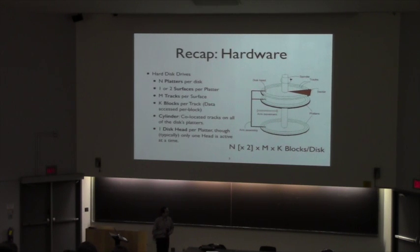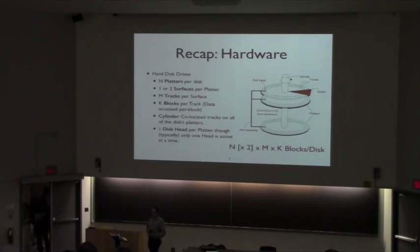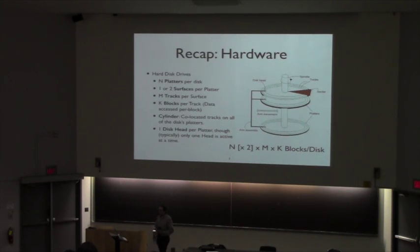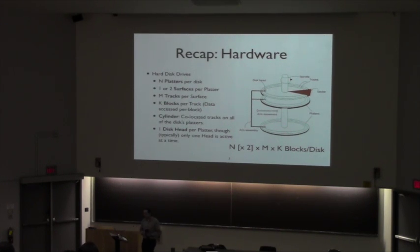I'd like to start with a recap from a couple of days ago. Because we're dealing with the memory hierarchy and specifically its lower levels, I want to do a quick recap on some of the hardware terminology. For a typical hard disk drive, it's composed of several platters — cylindrical things that store your data. Every platter can have one or two surfaces. Each surface has some number of tracks, and every track has some number of blocks. A sector represents all the tracks in the same arc, and a cylinder represents all tracks in the same position but on different surfaces.